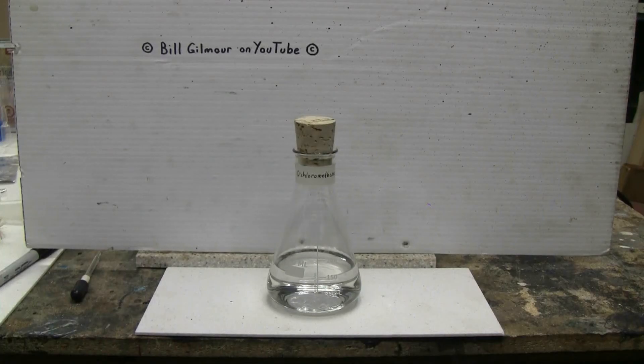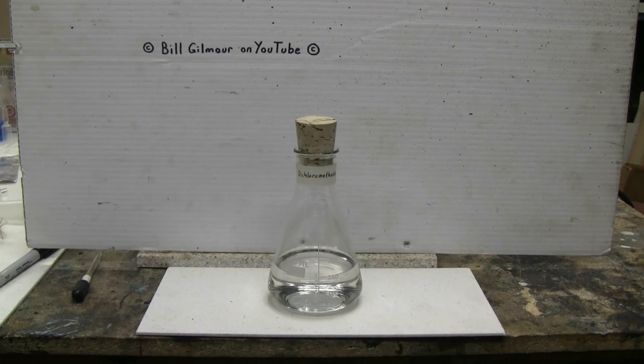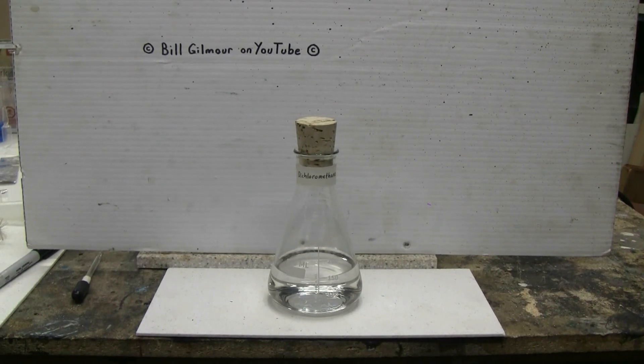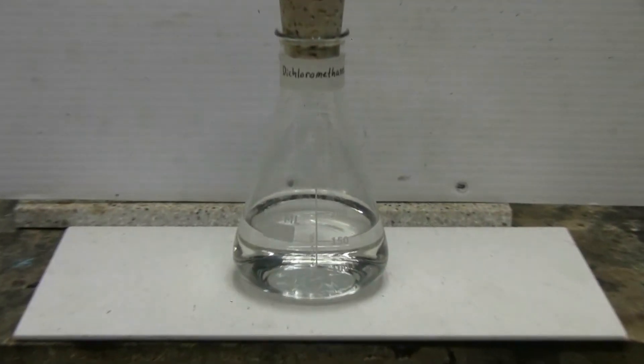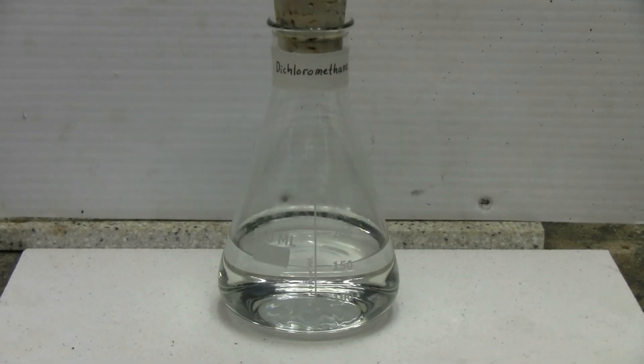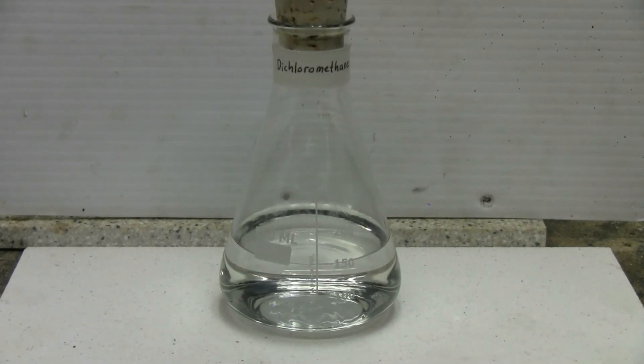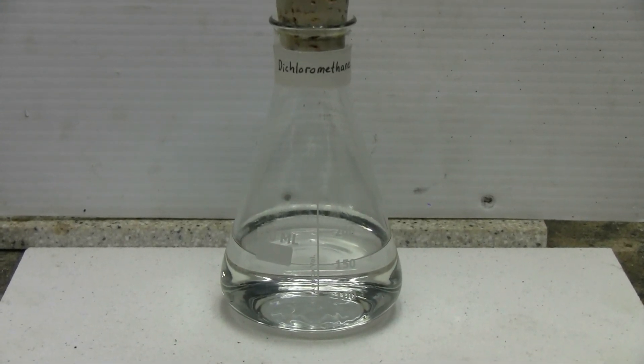Here's a look at the dichloromethane that I recovered from that heavy duty paint and varnish stripper. About 150 milliliters of quite clear, good-looking product.